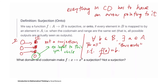An onto function or surjection is a function where the codomain and range are equal — all possible outputs equal all actual outputs. One way to remember the difference between onto and one-to-one is that in French 'sur' means 'on'. A good question is: what codomain and domain make f(x) = x² a surjection?